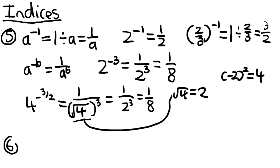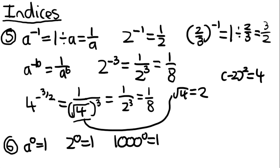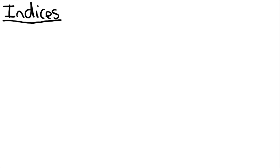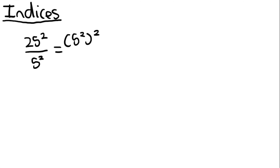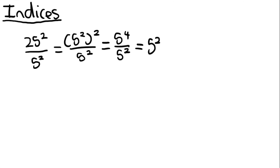The sixth and easiest law: A to the power of 0 is equal to 1 — any number to the power of 0 equals 1. Something very common in exams is a question like 25 squared over 5 squared. At first it looks like you can't apply an indices law because the bases aren't the same. However, 25 is 5 squared, so you can rewrite the top as 5 to the power of 2 to the power of 2, giving 5 to the power of 4. Then divide by 5 squared to get 5 to the power of 2. Remember the relationships between square numbers and their roots, because this can catch students off guard.